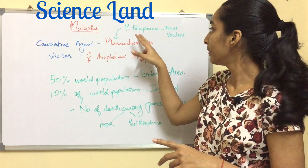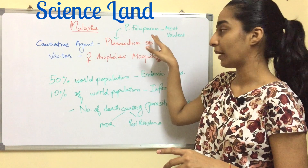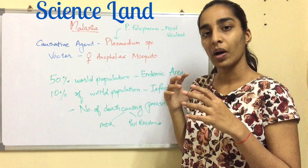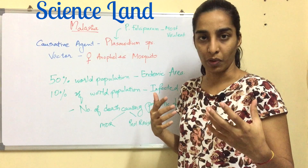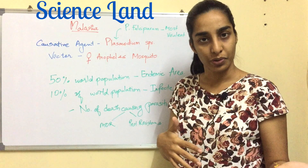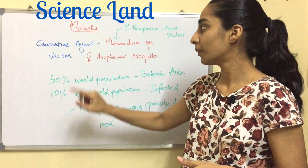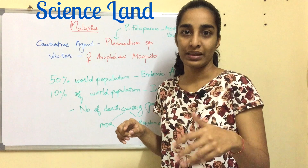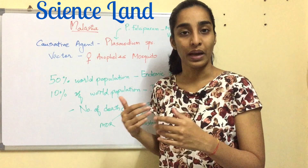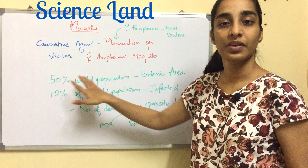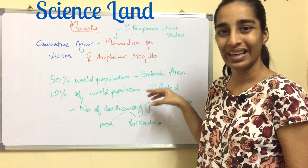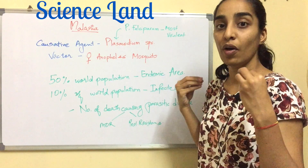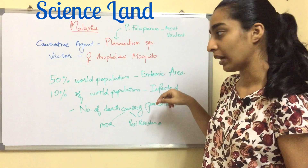Examples of Plasmodium species include Plasmodium vivax and Plasmodium falciparum. Plasmodium falciparum is the most virulent. The vector responsible for transmitting the protozoa to the human body is the female Anopheles mosquito. Females feed on blood but males do not — males usually feed on plant juices. 50% of the world population lives in malarial endemic areas.